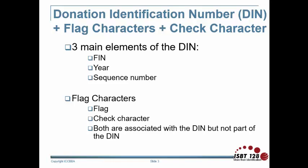I will break down the elements of the DIN and the product code. Beginning with the Donation Identification Number, there are three main elements of the DIN. First is a Facility Identification Number, or FIN. Second is the year in which the DIN is assigned. Third is a Sequence Number assigned. There are two additional elements: the flag characters and check characters. Both are associated with the DIN but are not actually part of the DIN itself. They are intended for process control and are not part of the unique identification of the product.